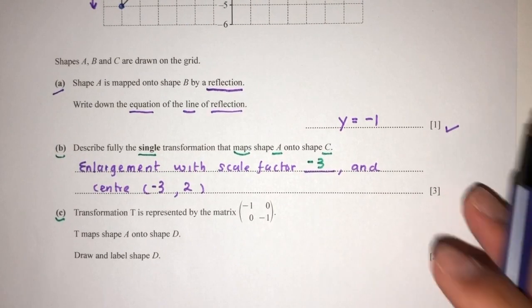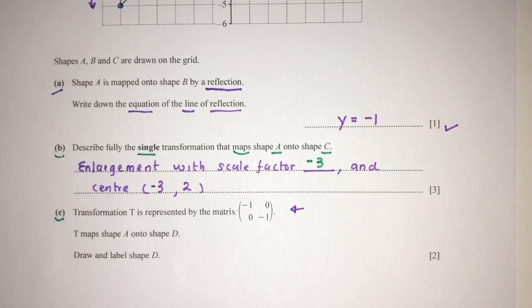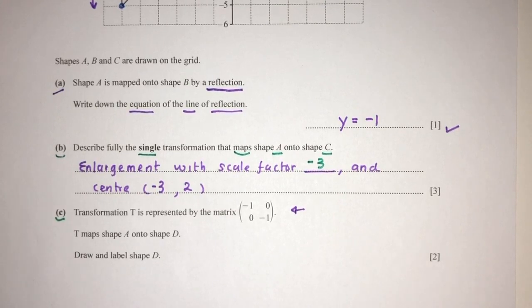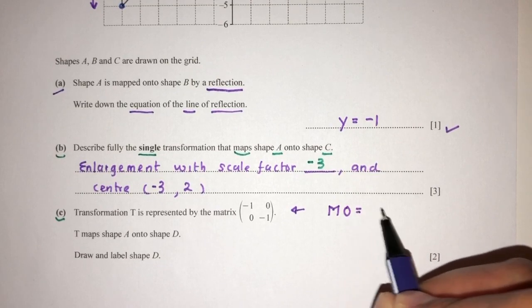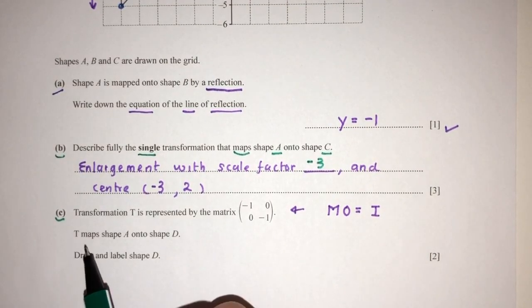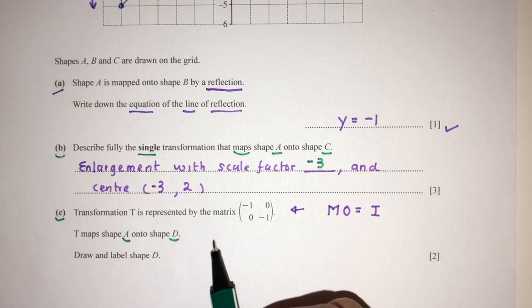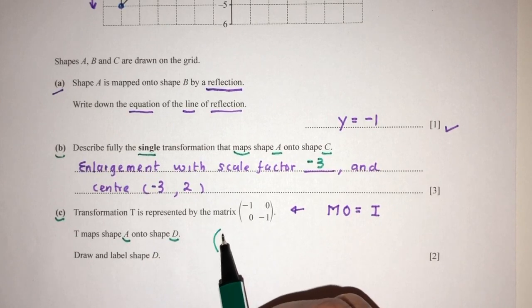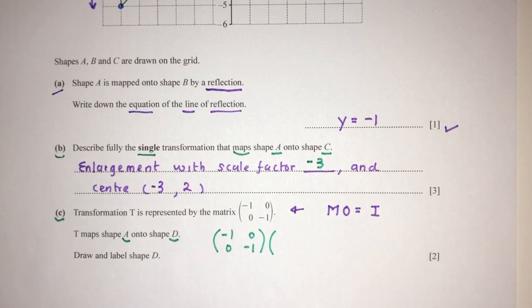The transformation T is given by this matrix. Now we can understand what we are trying to do. The idea is that matrix times object equals image. T maps shape A onto shape D. So T is the matrix: (-1, 0; 0, -1). And the object is A.